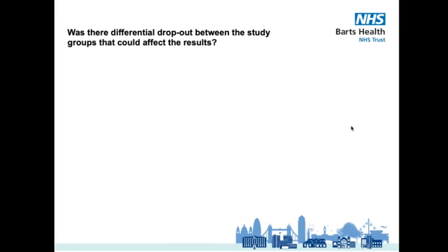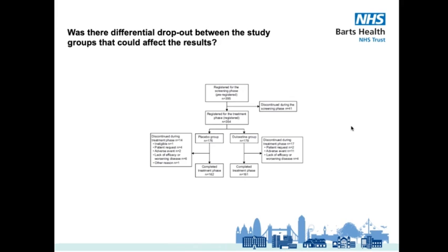Our next consideration point asks: was there differential dropout between the study groups that could have affected the results? The number of dropouts, also called attrition, was roughly the same across groups. You can check figure 2, the CONSORT diagram on page 812, for this. There were 14 dropouts from the placebo arm and 17 from the intervention arm. If there was a larger disparity, that would be a red flag and may hint at the intervention being intolerable or a flaw in the study's conduct. Here, happily, we can answer no.